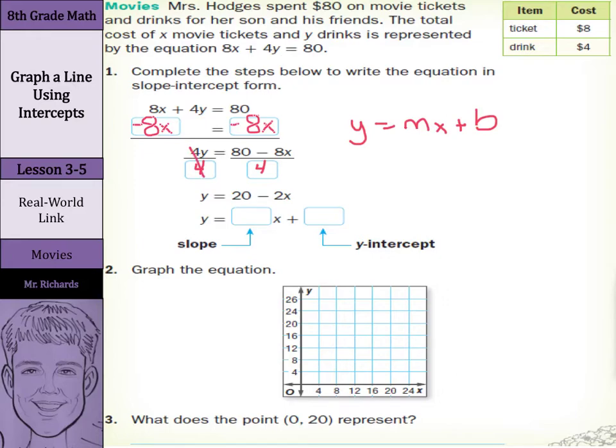That y is now left alone, as it is here. And 80 divided by 4 is 20. And 8x divided by 4 is 2x. So now we can rewrite this in the form y equals negative 2x plus 20.